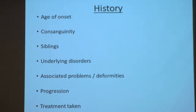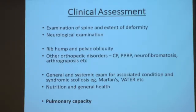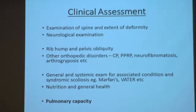Most importantly, you have to ask for progression. When was it first found? Is it progressive? How was it found out? Since onset, has it increased? This is the most important information for treatment. And if it is already diagnosed, ask what treatment has been taken so far.